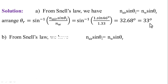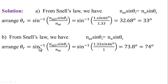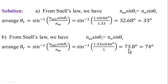For part B, from water to air using Snell's law: Nₐᵢᵣ × sin θᵢ = Nᵥ × sin θᵣ. Rearranging: θᵣ = sin⁻¹(Nᵥ × sin 46° / Nₐᵢᵣ) = sin⁻¹(1.33 × sin 46° / 1). The final answer θᵣ = 73.8°, approximately 74 degrees.